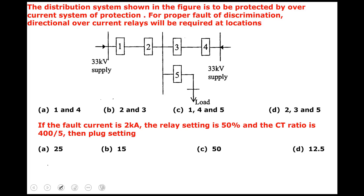A distribution system is shown in the figure, protected by an overcurrent system. For proper fault discrimination, directional overcurrent relays will be required at certain locations. There is a 33 kV supply coming from either side — from this point and from this point also.